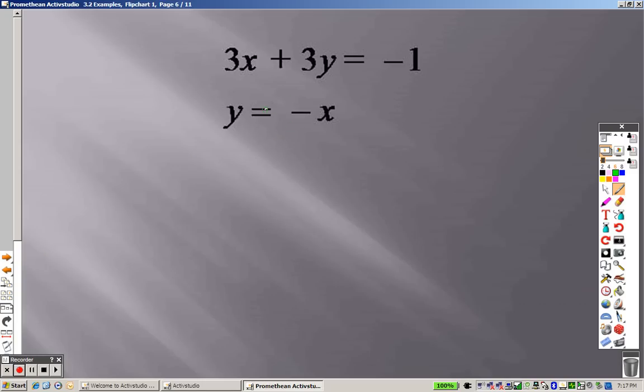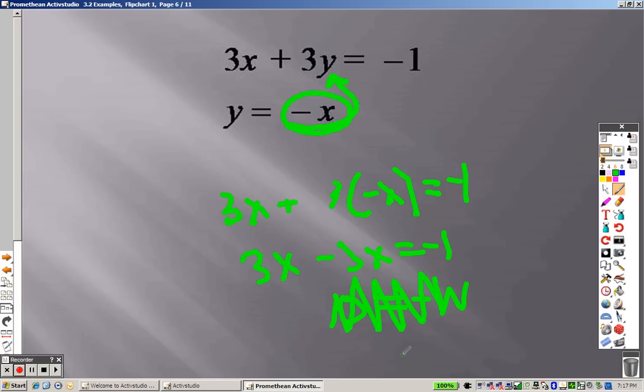This method, you can just use substitution. If this is what y is, take this and plug it in for y. So 3x plus 3 times negative x equals negative 1. So we get 3x minus 3x equals negative 1. You get 0 equals negative 1. That makes absolutely no sense. Since that makes absolutely no sense, what do you think the answer is? No solution is what the answer is because it makes no sense.